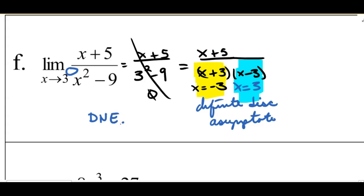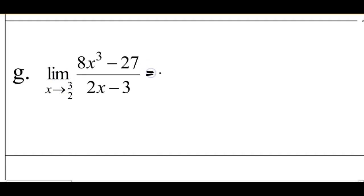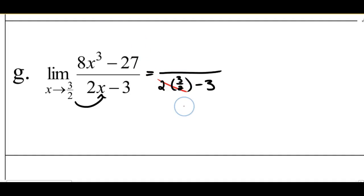For G, first thing I'm going to try is direct substitution. In the denominator, I substitute 3/2 in for X: 2 times 3/2 minus 3. The 2's cancel, leaving 3 minus 3 is 0. So that's not good. I need to go back and see if I can factor, and this is going to be a factoring of cubes. So I have 8X cubed minus 27.